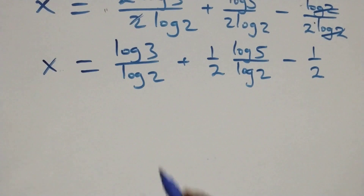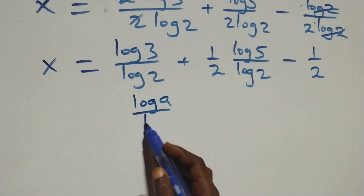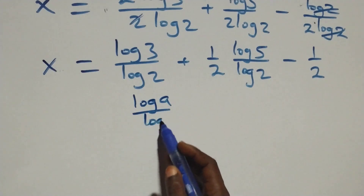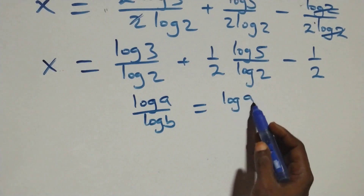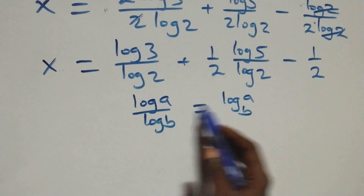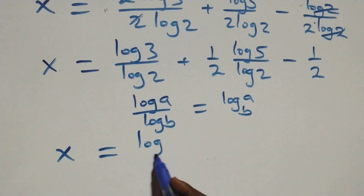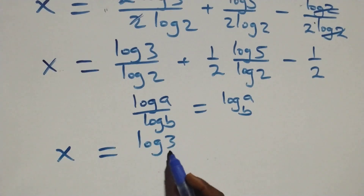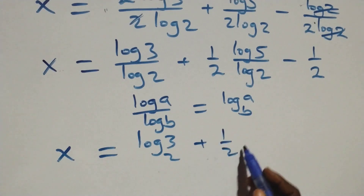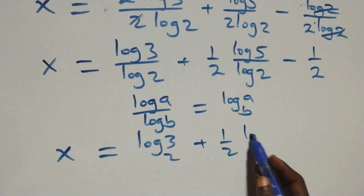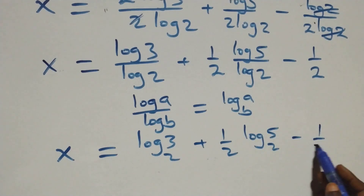Applying the change of base formula, where log a over log b equals log a to base b, this becomes x equals log₂3 plus one-half times log₂5, minus one-half.